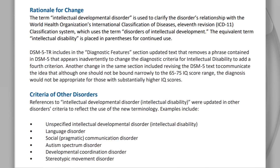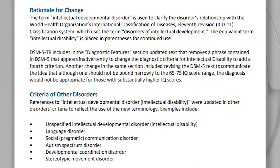The DSM-5-TR also includes updated text in the Diagnostic Features section that removes a phrase which appeared to inadvertently add a fourth criterion for intellectual disability — there are not four criteria, but the old wording could be read that way. Another change revises the text to communicate that although one should not be narrowly bound to the 65–75 IQ score range, the diagnosis would not be appropriate for those with substantially higher IQ scores. The term 'intellectual developmental disorder' was also updated in other conditions, which include autism spectrum disorder.